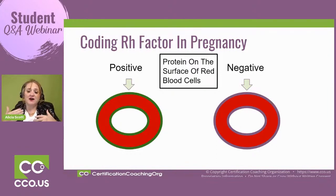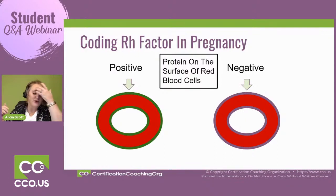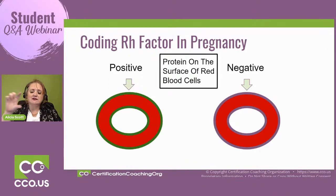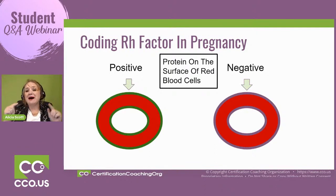If you are Rh positive, you have that protein layer around the outer layer of your blood cells. If you're Rh negative, that outer protein layer is missing. It's normal to be either or — however, most people are probably positive. I've got a little diagram of the most common blood types. I know I'm O positive and my husband is A positive, which is a more rare blood type.